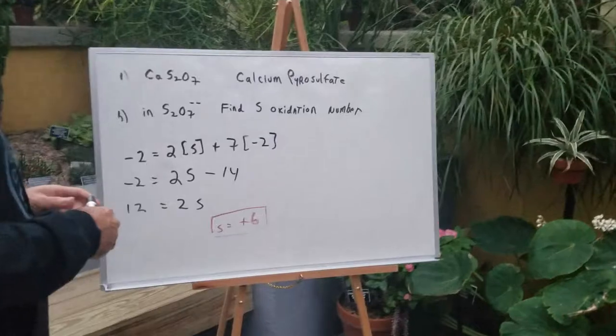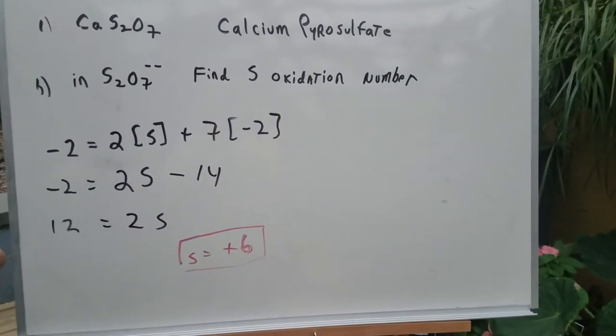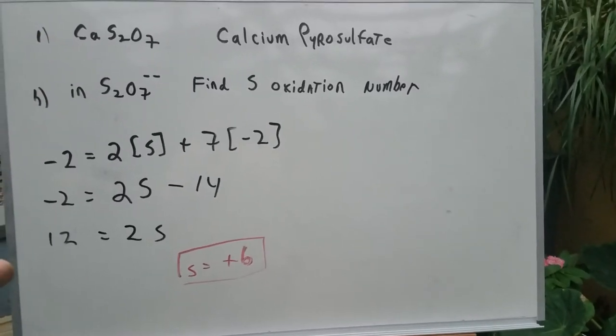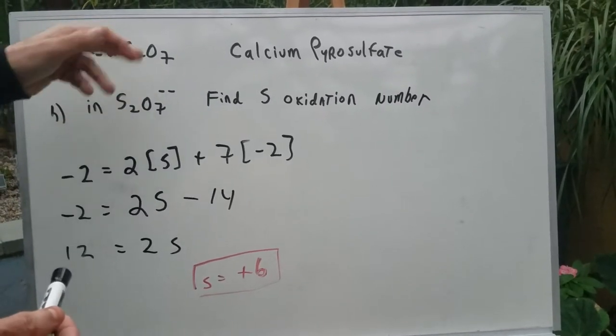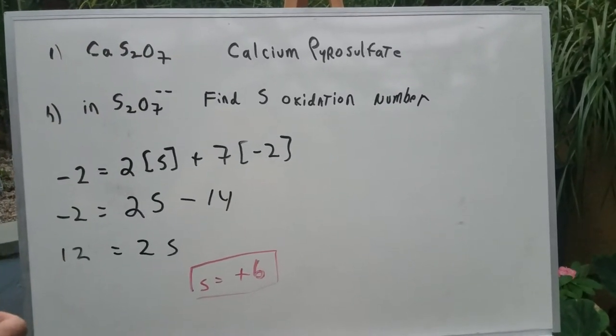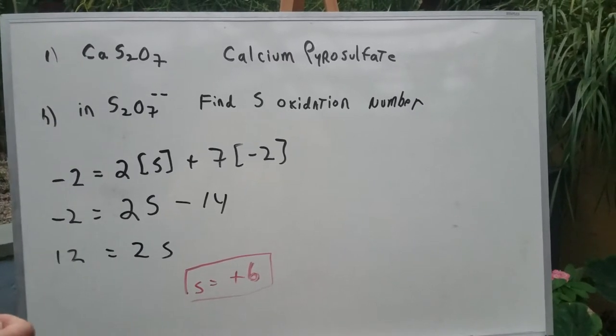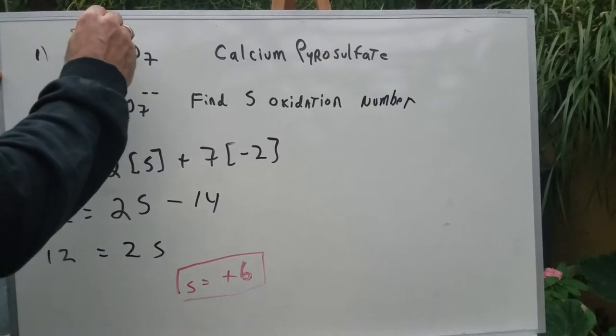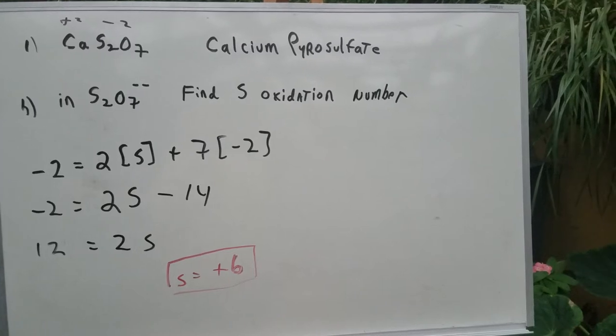Okay, Dr. Romano. The first part of this, if I gave you CaS2O7 and asked you to name it, well, if it was CaSO4, you would have called it calcium sulfate. But this is an ion that's not so common. It's called pyrosulfate. So we would call this calcium pyrosulfate. And as you can see, calcium is plus 2, so the pyrosulfate anion is minus 2.